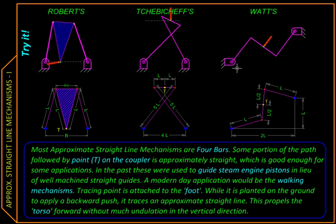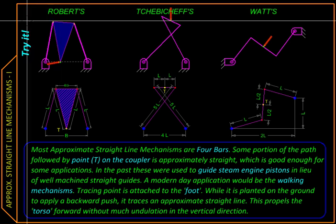So all they had were pin joints or revolute pairs, and using only those they had to create a mechanism which would guide a point along a straight line. So there were two solutions or two classes of solutions: one was approximate and one was exact. We are going to start with the approximate straight line mechanisms.